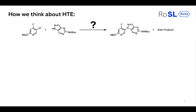Let's start with how we actually think about high throughput. Take this example of a Buchwald-Hartwig reaction: you have that reaction in your lab, you're supposed to make that product as fast as possible. However, you don't know the question mark — the parameters of that reaction. You don't know which catalyst you should use, which base you should use, or in what kind of solvent this reaction should run.